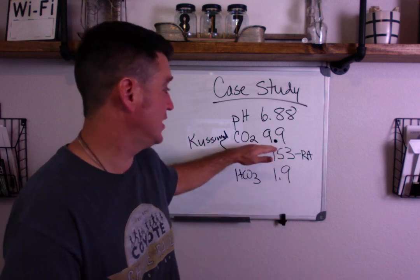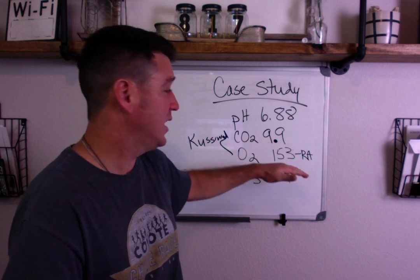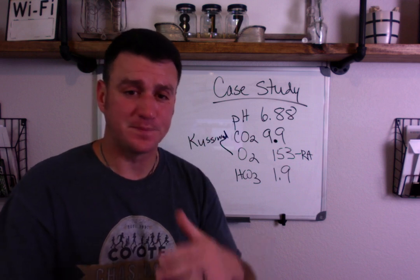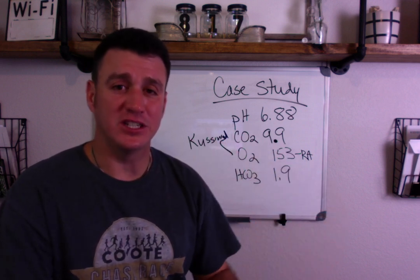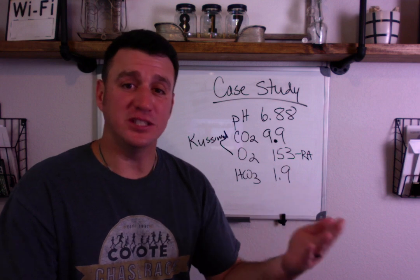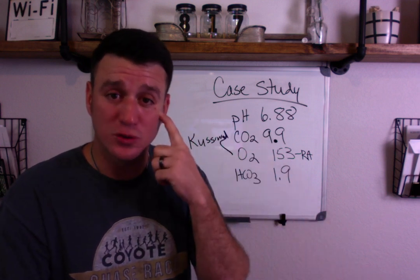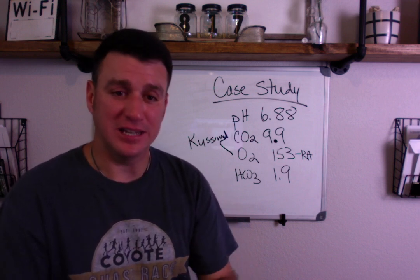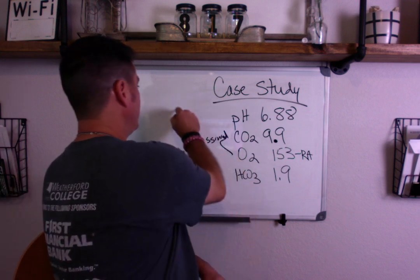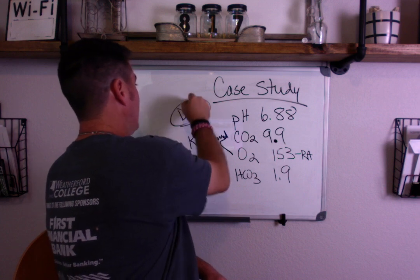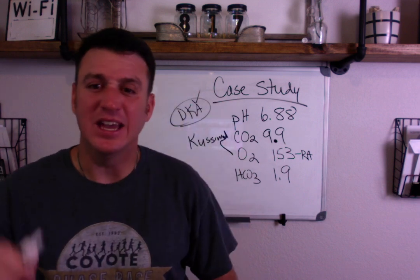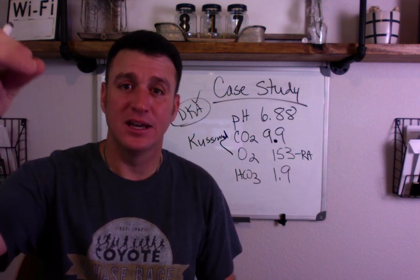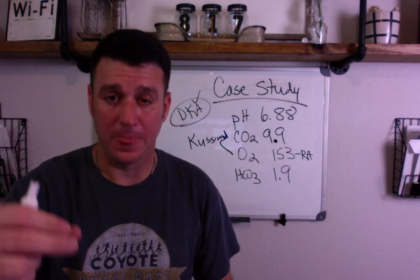Partially compensated because the CO2 is clearly out of range, but not enough to bring the pH into range. The case goes like this: the patient presented with this ABG, and my initial thoughts from the comment were DKA — diabetic ketoacidosis. And that was exactly correct — this is textbook classic DKA.